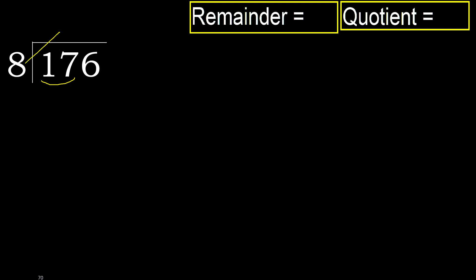8 — multiply by which number is nearest to 17 but not greater. Multiply by 3: 24. 24 is greater. Multiply by 2: 16. 16 is not greater.